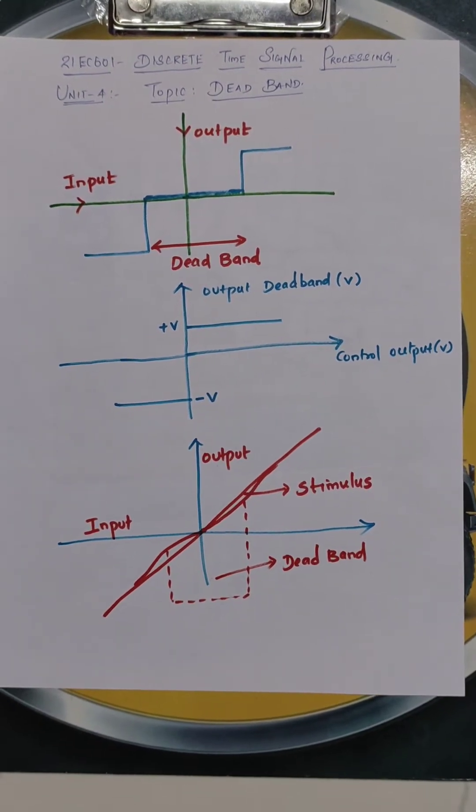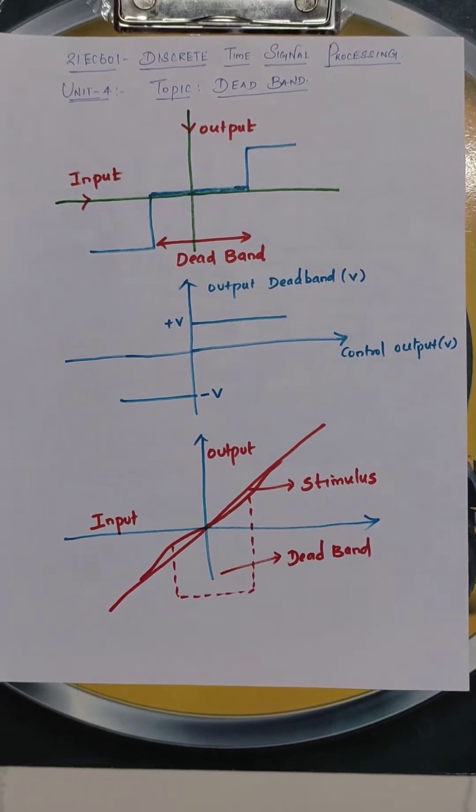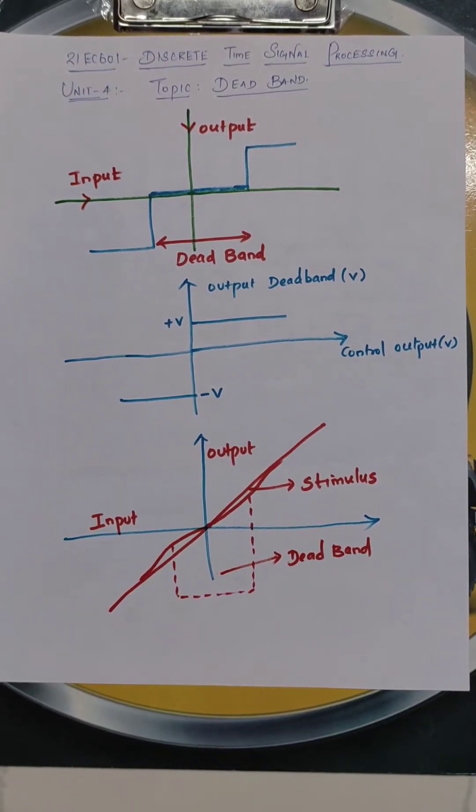The subject name is Discrete Time Signal Processing. Subject code is 21EEC601, Semester 6, Department ECE.